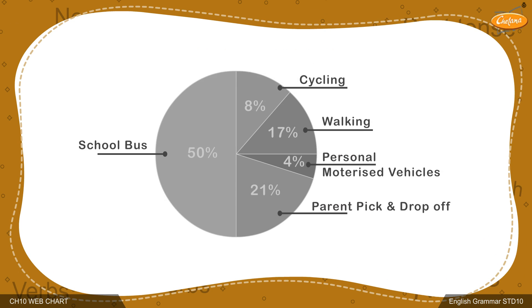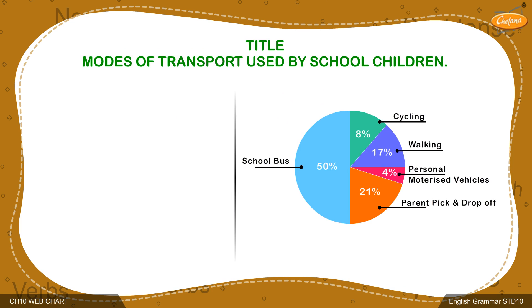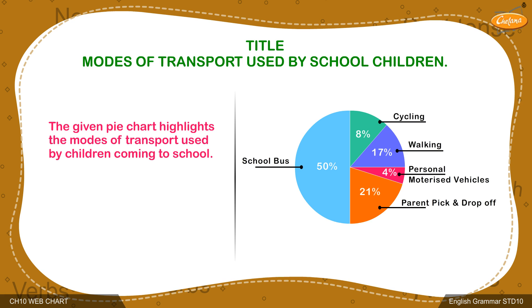Let's now have a look at how information shown in a pie chart can be written in a verbal format. Firstly, you need to understand what the diagram is all about. Here, the pie chart gives us information on modes of transport used by school children. This will constitute the title or heading of a paragraph.